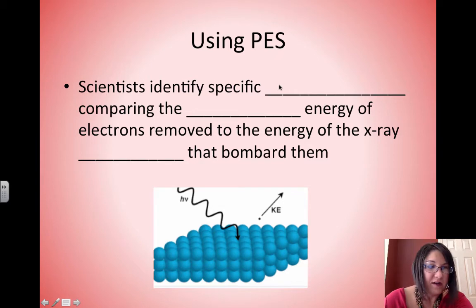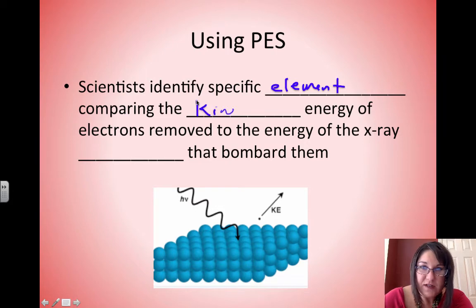Scientists identify specific elements by comparing the kinetic energy of the electrons removed to the energy of the X-ray photon that bombards them.